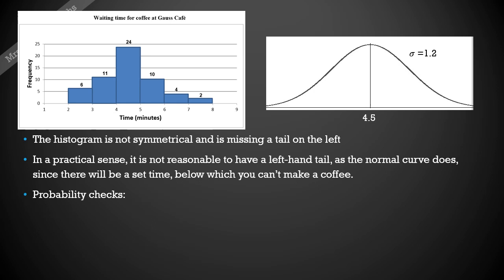Now do some probability checks. For this one I'm just going to show you a probability of there being a wait time between four and five minutes. So that's our middle section on the histogram where we've got 24 people where their coffee took four to five minutes to do. So that's a probability of 0.421.